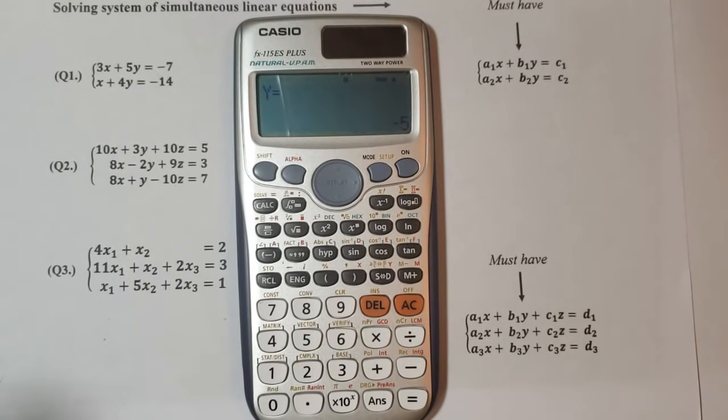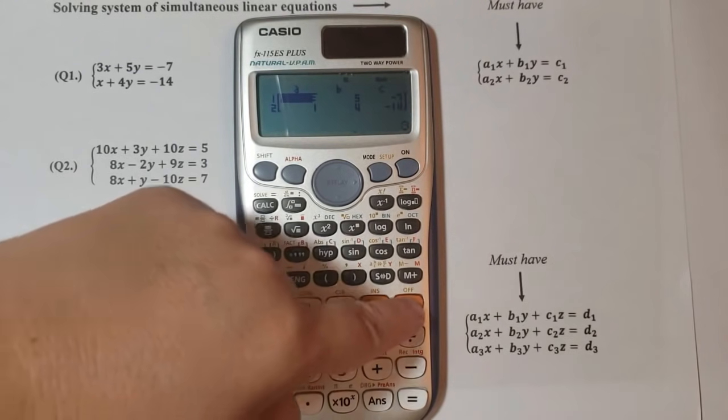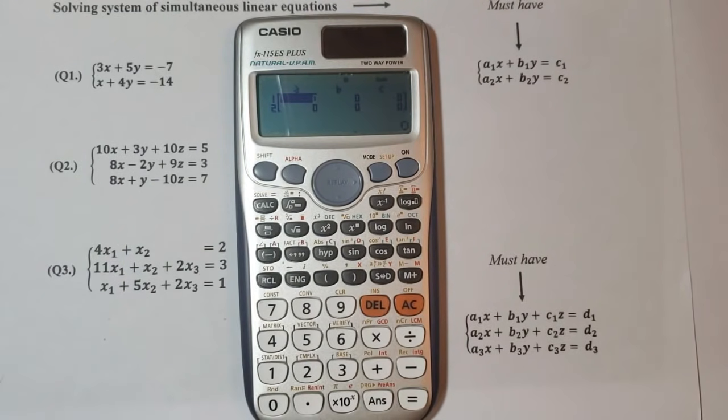We press AC, the all clear button here. But we can see now in our second question we have three variables, three unknowns: x, y, and z. First we have to make sure that we follow the standard equation form here.